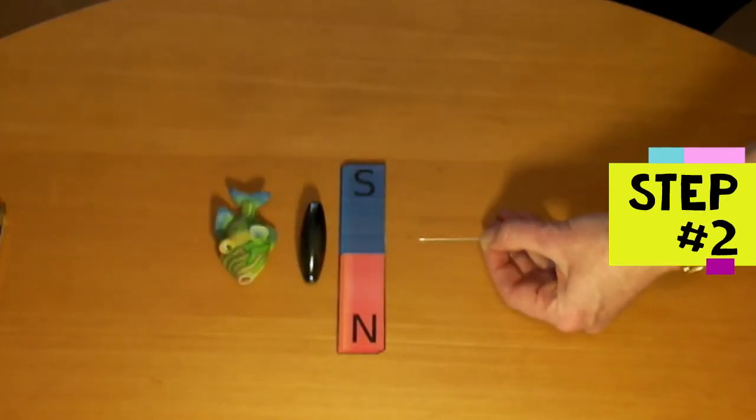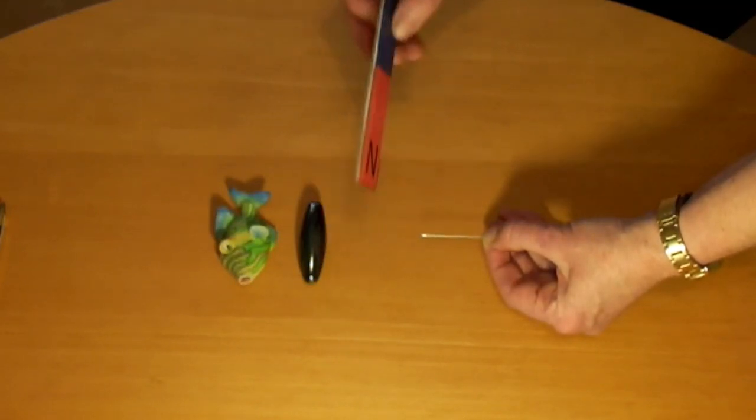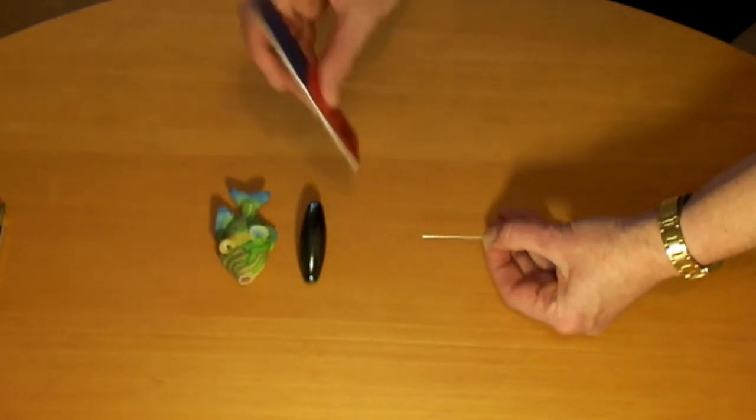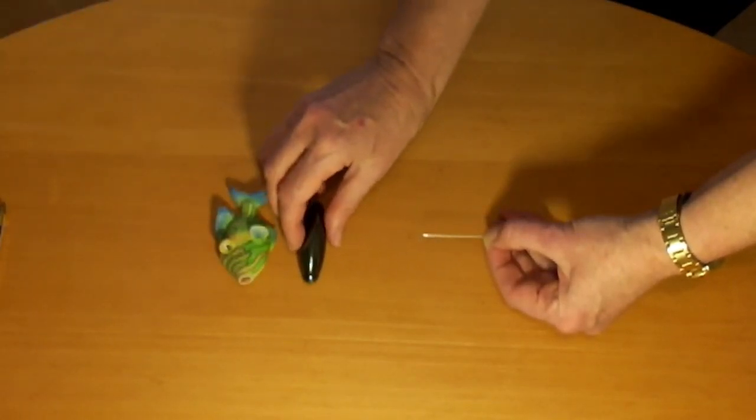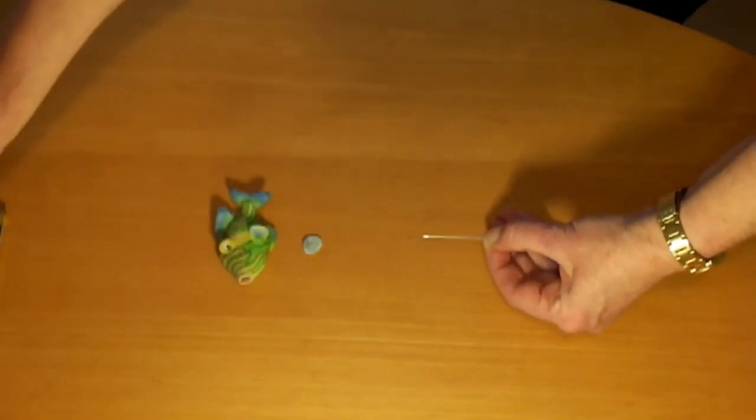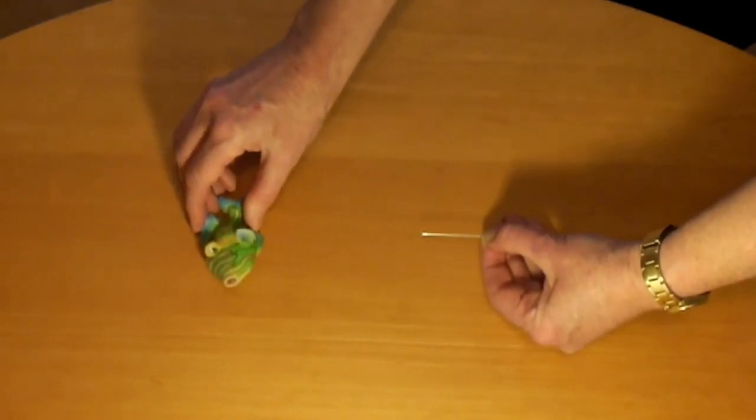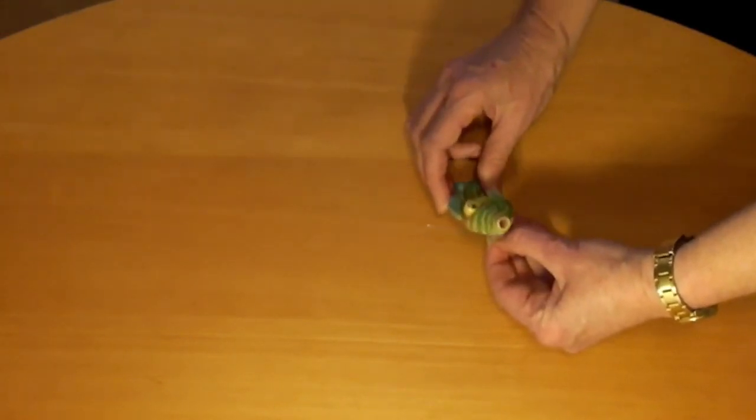Step two is to magnetize the needle. Hold the needle by the eye end so that you don't spike yourself, and stroke it 20 times with one pole of a magnet. If you're using a bar magnet, use one of the ends. If you have oids, use one of the scratched sides. If you're using a fridge magnet, just use the back. You have to lift the magnet away from the needle on the return stroke like this.